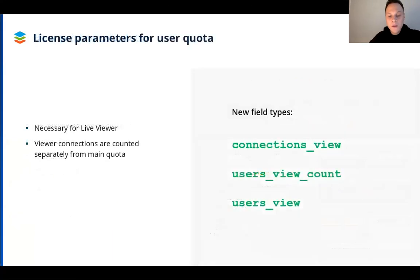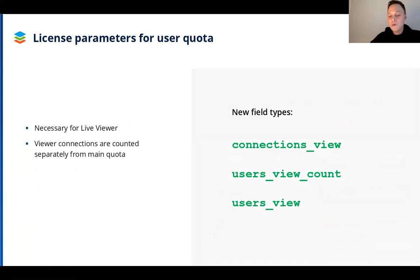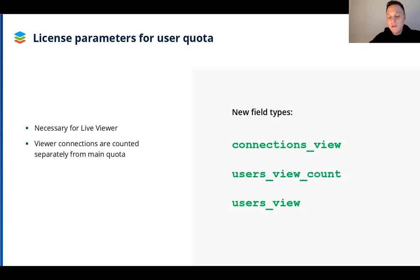The new license also includes user quota parameters, which are necessary for enabling Live Viewer. It includes several optional fields: connections view specifies the number of connections for Live Viewer, counted separately from the total number of simultaneous connections. User view count specifies the number of users reserved for Live Viewer, and user count defines the number of users for the user license. To activate the feature, you'll need to obtain the new type of license.